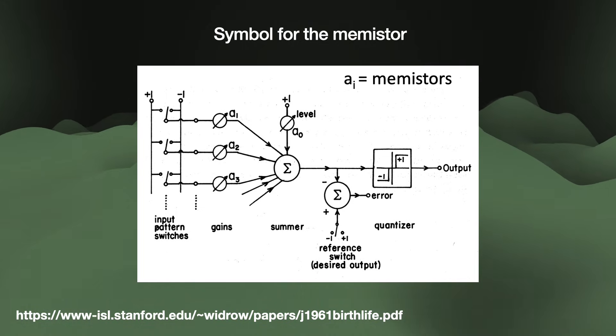The memistor and memristor are pretty similar, but there are two critical differences. First, there are three terminals rather than two. And second, it was not a solid-state device, which was a prerequisite for the device to ever become useful and scalable in semiconductor production. So despite being used for some neural network research in the 1960s, it ended up largely being forgotten.